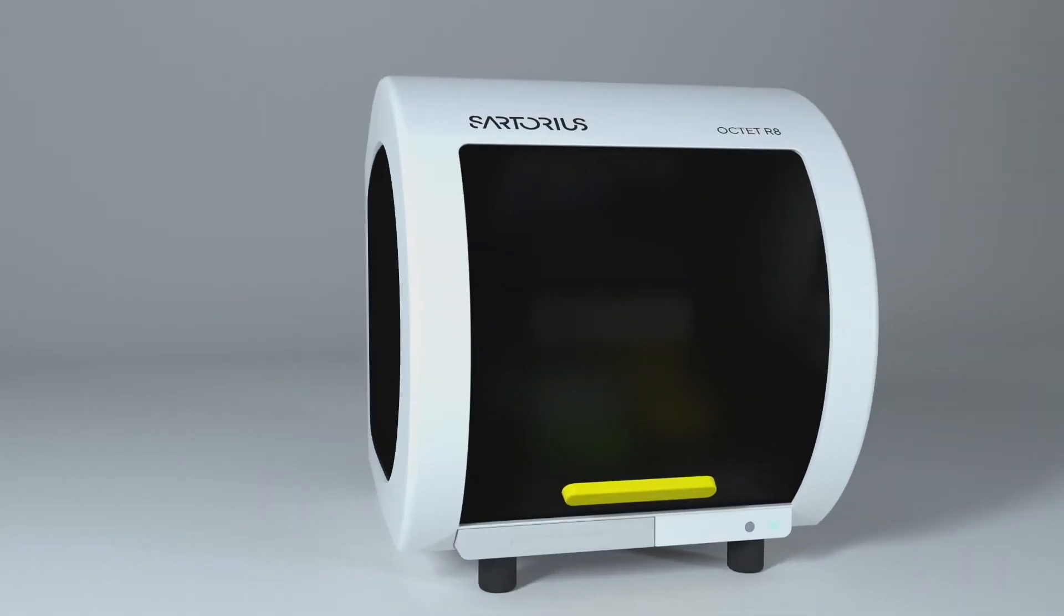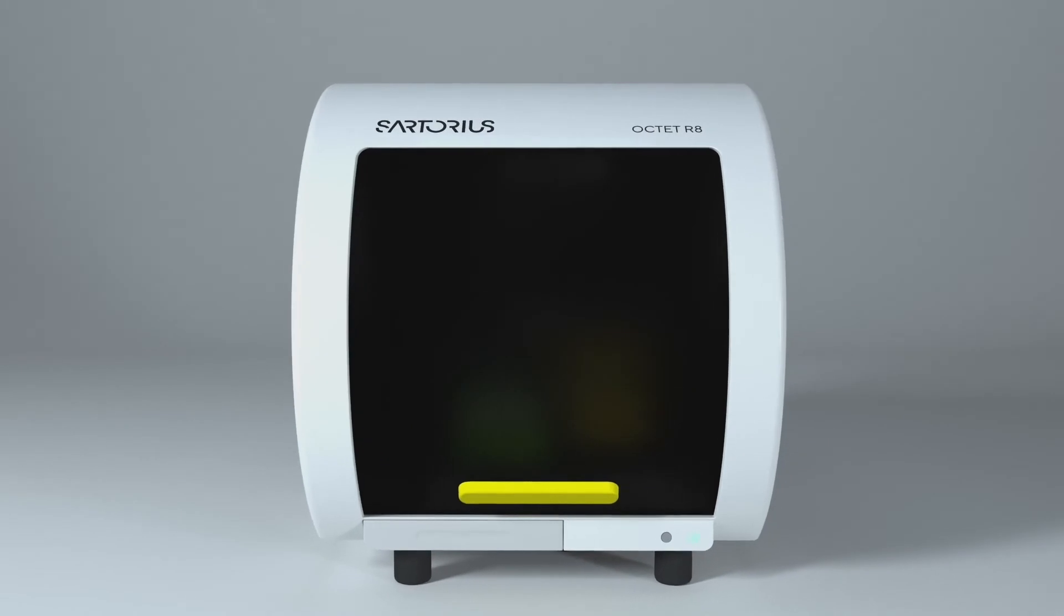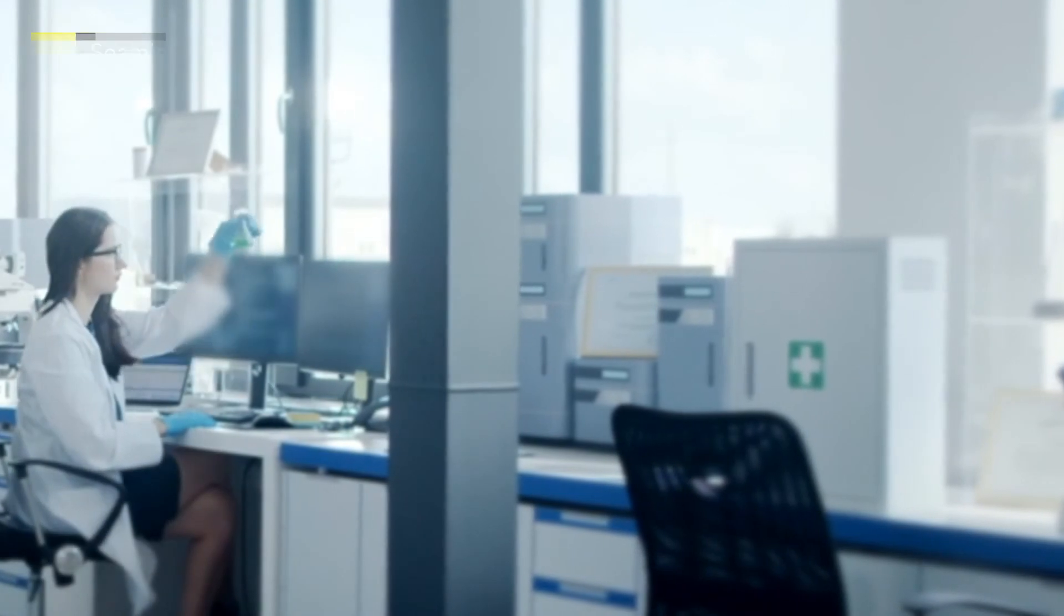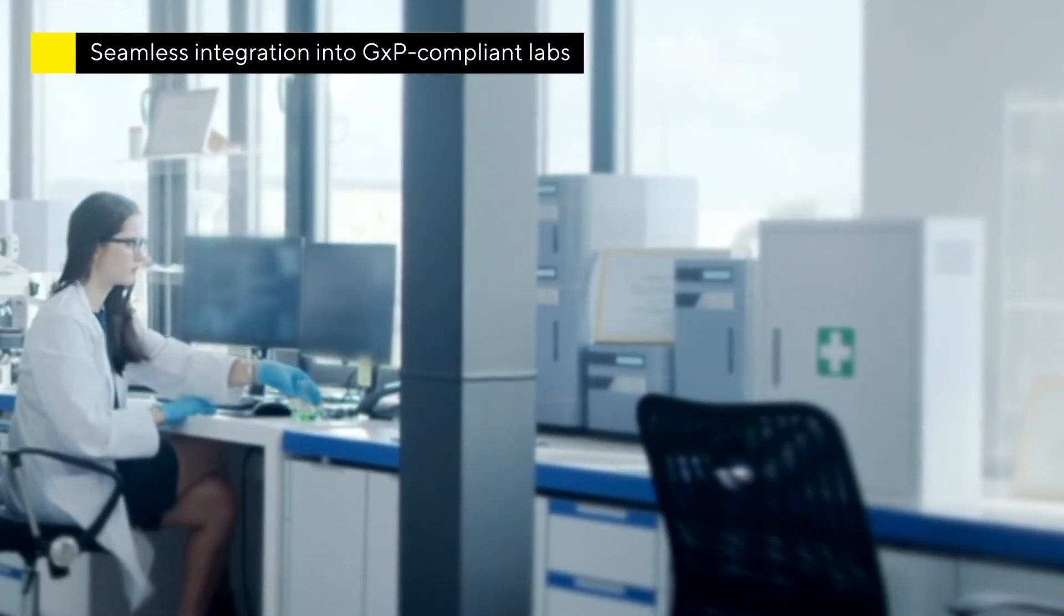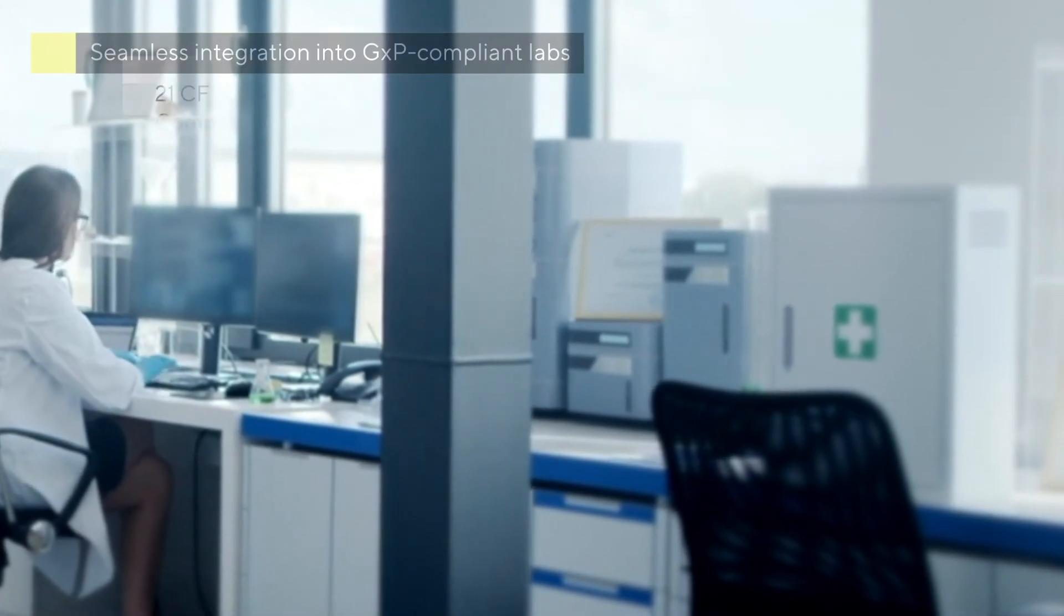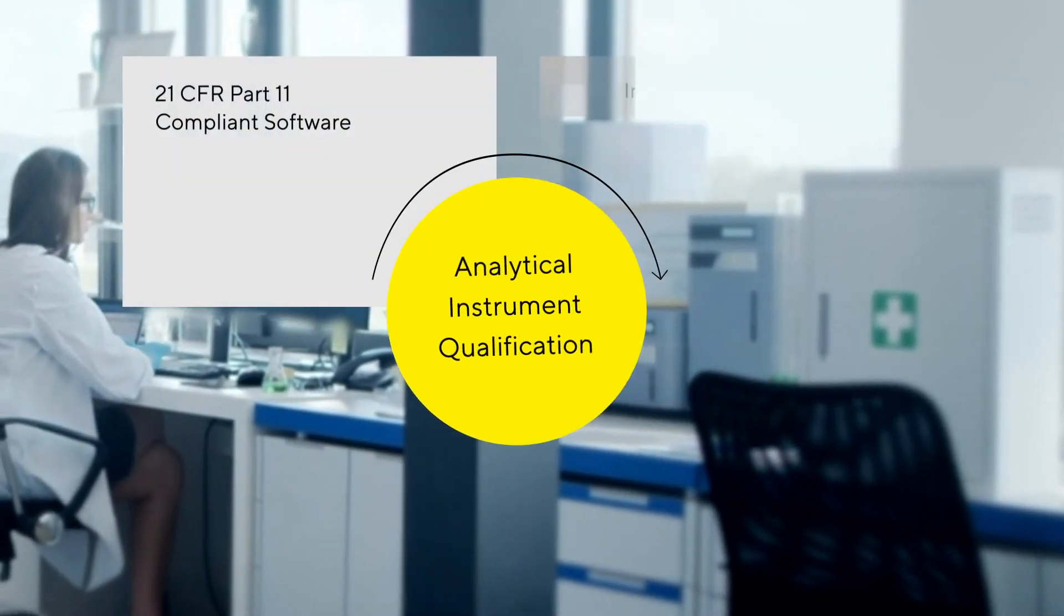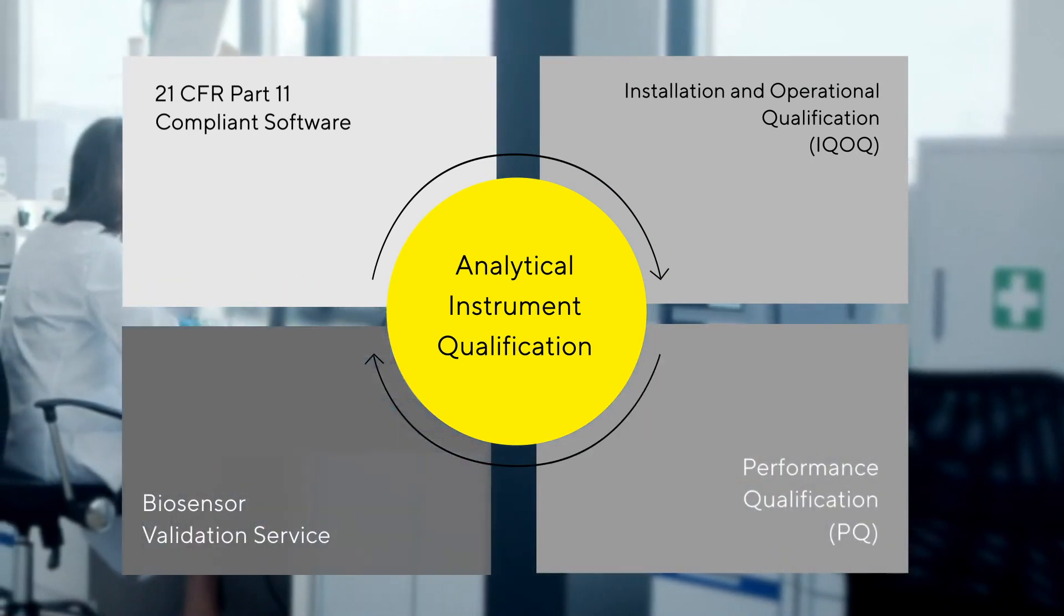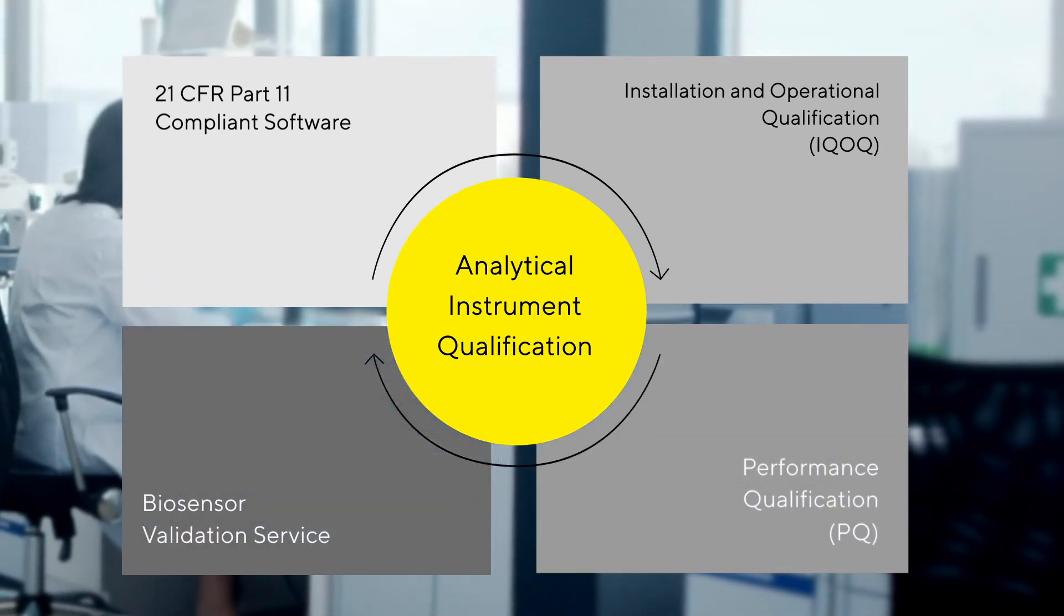The top-of-the-range Octet-R8 offers high-throughput analysis while still being within budget of most labs. Intended for use in both peer research and GMP environments, the Octet-R8 is designed to work seamlessly with 21 CFR Part 11-compliant software, simplifying and streamlining the compilation of documentation for regulatory filings.